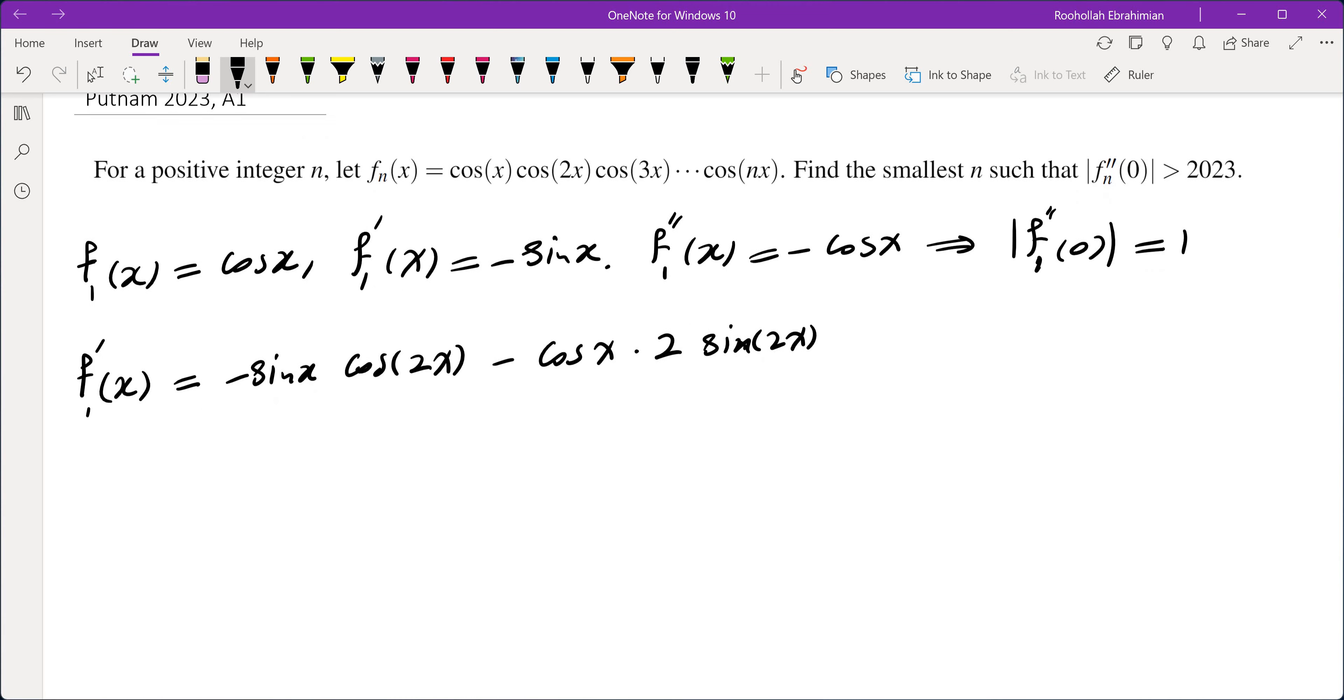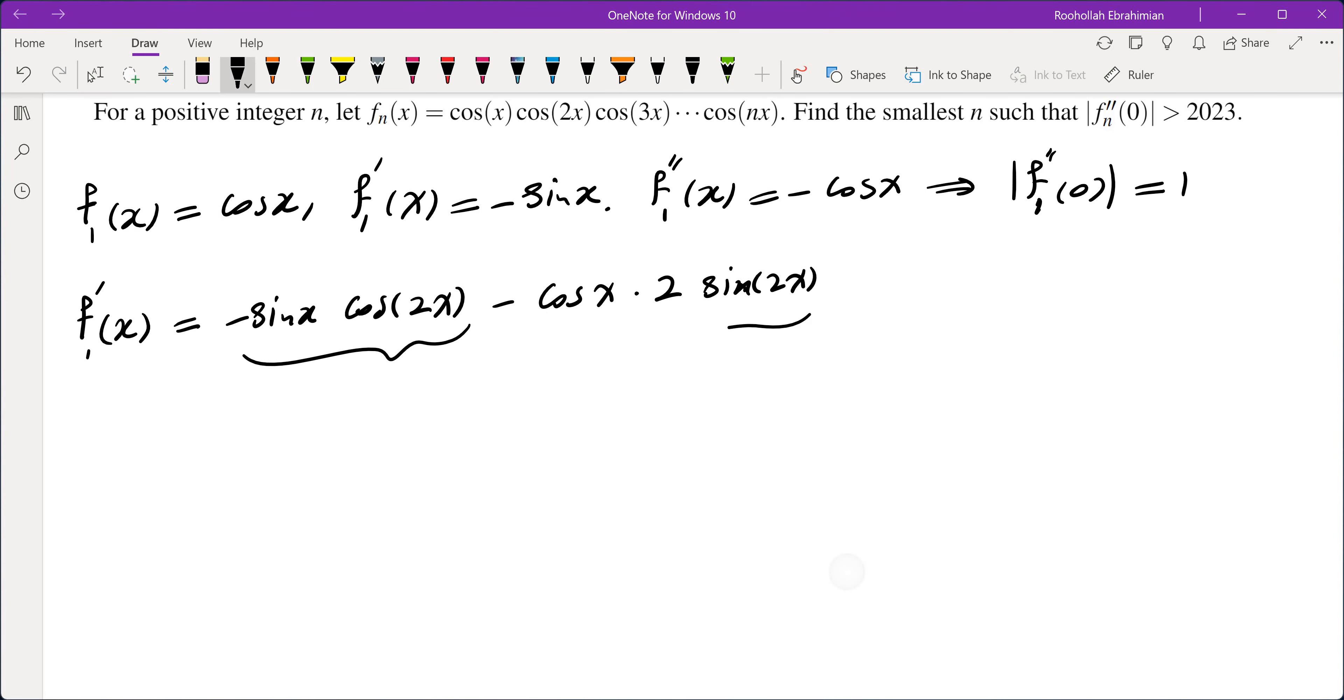When we take the derivative of this one, we'll have to use two product rules. So f_2''(x) becomes, the first one is negative sin(x), and then we take the derivative of cos(2x). When we plug in 0, it doesn't matter because this is going to end up being 0.